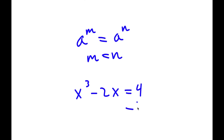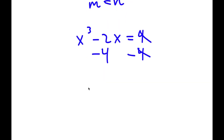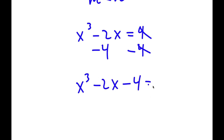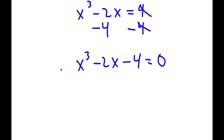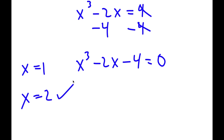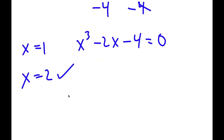To solve this, I'll first subtract 4 on both sides. These two cancel out, giving x³ minus 2x minus 4 is equal to 0. I'll check solutions: x equals 1 gives 1 minus 2 minus 4 equals negative 5, so that doesn't work. x equals 2 gives 8 minus 4 minus 4 equals 0 — so x equals 2 is a valid solution, meaning x minus 2 is a factor.